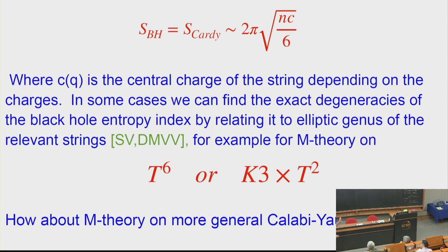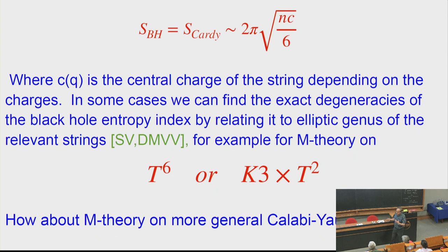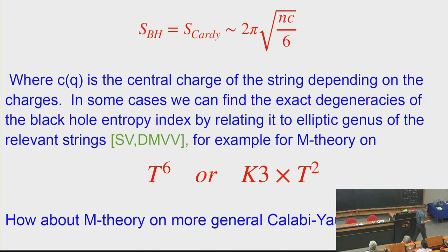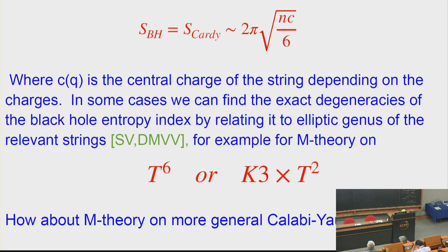There are counter-examples where cancellations do occur, so today I will only discuss the black hole entropy index where things can be computed in a relatively straightforward fashion — which most of the time agrees with the black hole entropy at least to leading order. In some cases you can compute this exactly, for example for five-dimensional black holes in M-theory on T6 or K3 cross T2. You find things related to the elliptic genus of symmetric products of K3 or T4, giving the right entropy including all corrections.